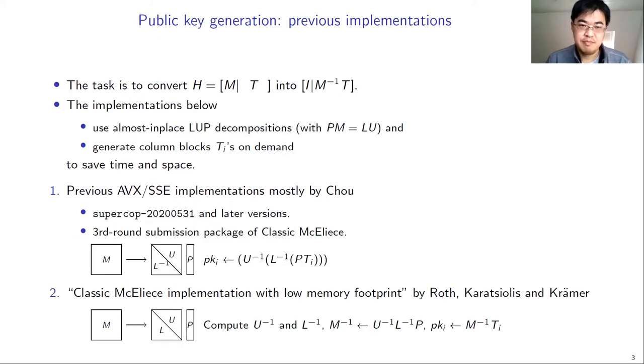Our first optimization is the key generation. Basically, you have a large rectangular matrix H. And you want to turn the first part, the M part, into an identity matrix. And then you multiply the rest part, the T part, by the M inverse matrix. And the product is the public key.